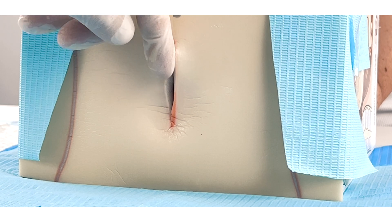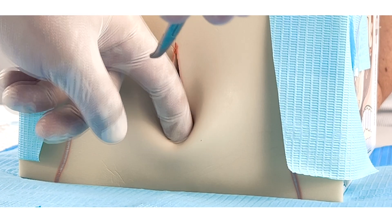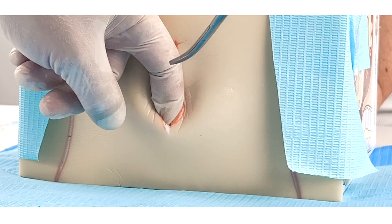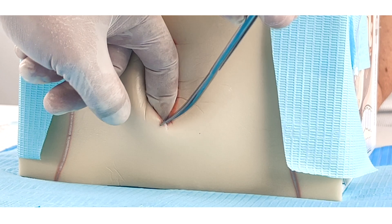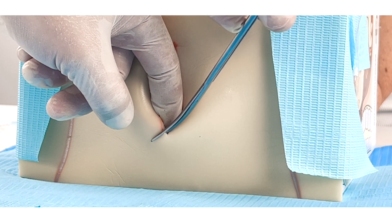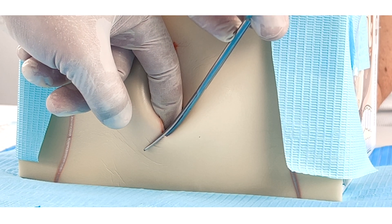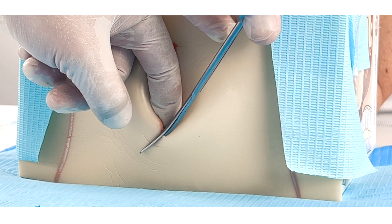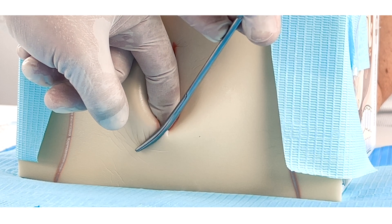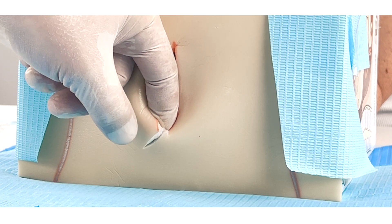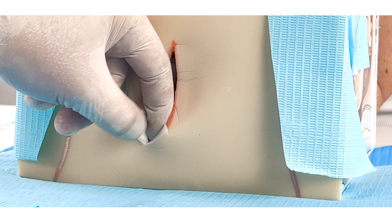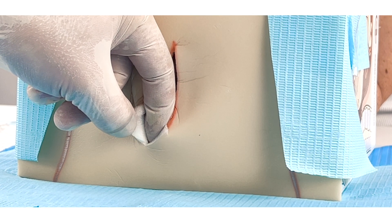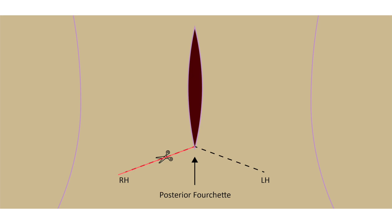With the non-dominant hand, protect the fetal head by inserting the index and middle fingers inside the vagina, creating a space for an incision between the fetal head and the perineum. Using the dominant hand, make a three to four centimeter diagonal incision at a 45 to 60 degree angle from the posterior fourchette to the side of the vaginal opening using the dissecting scissors.